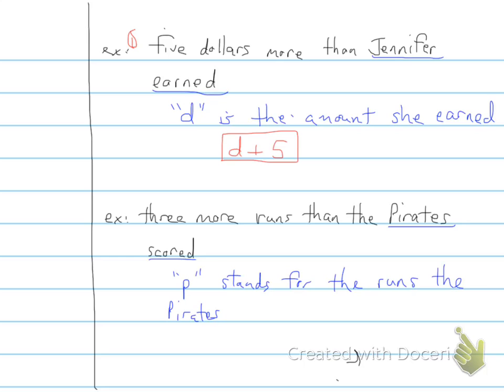Now based on that information, if we're trying to find out three more runs than the Pirates scored, that means that we are taking our variable, P, and we're adding three to that.